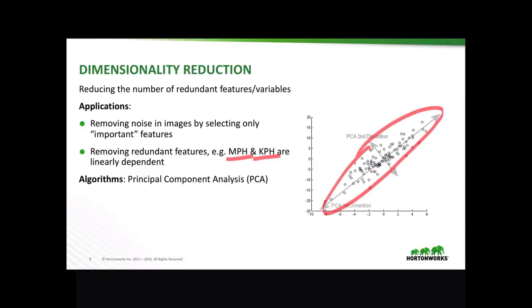If some axis of the ellipse is small, then the variance along that axis is also small, and by omitting that axis and its corresponding principal component from our representation of the dataset, we lose only a small amount of information. This allows us to determine what's the most relevant data to use to train our model.